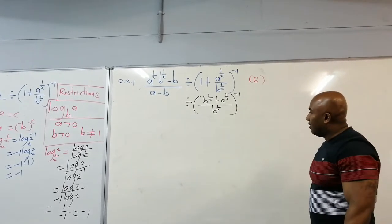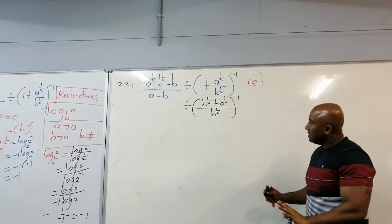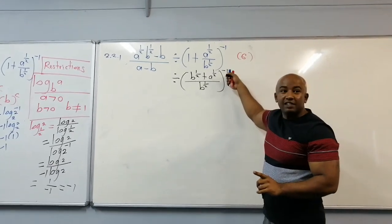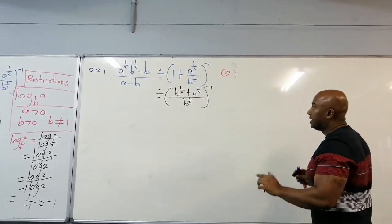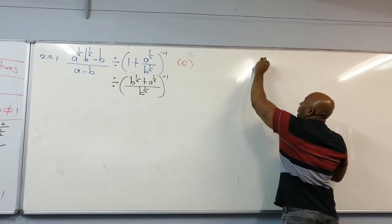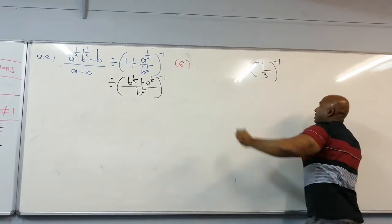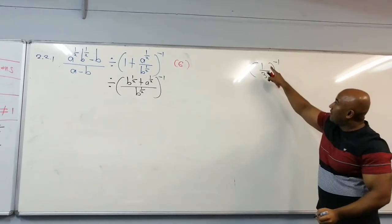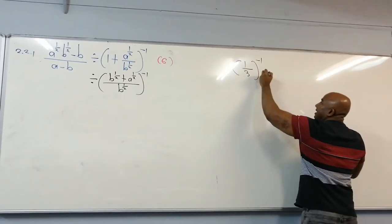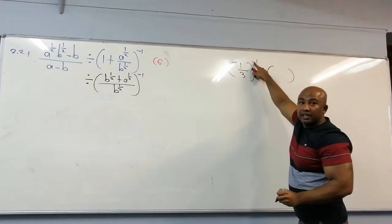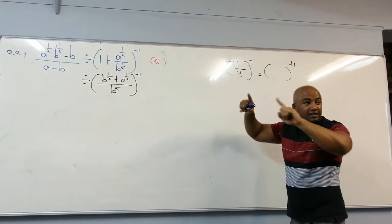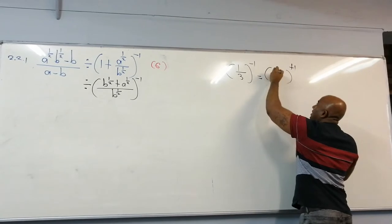Let's simplify the inner expression first. Getting an LCD gives b to the power half plus a to the power half, all divided by b to the power half — and that becomes raised to the exponent of negative 1. Now to deal with the negative power: if you have a fraction raised to a negative power, you make the exponent positive by swapping numerator and denominator. So 1 over 3 to the power minus 1 becomes 3 to the power 1, which is 3.